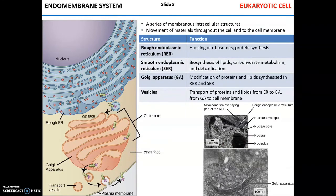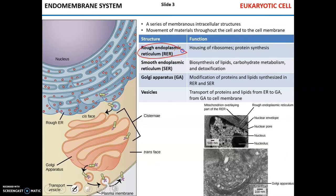Adjacent to the nucleus is the endomembrane system of the cell, which is basically a series of intracellular structures made of membranes. The main function of that system is to move materials through the cell from one part to another and to the cell membrane. The endomembrane system consists of four organelles: rough endoplasmic reticulum, smooth endoplasmic reticulum, Golgi apparatus, and various vesicles.